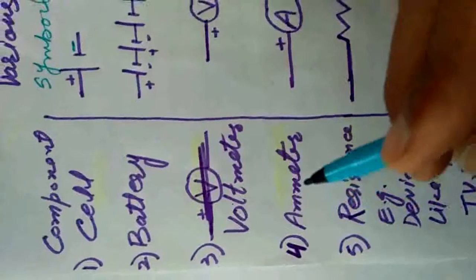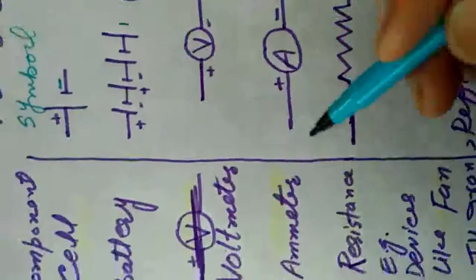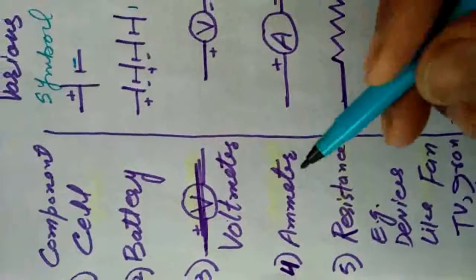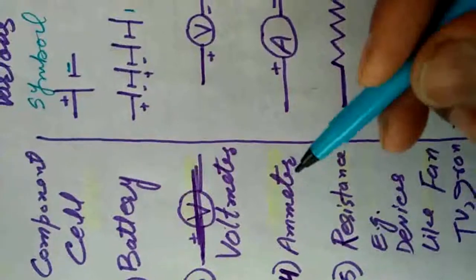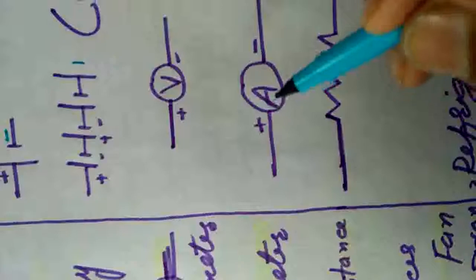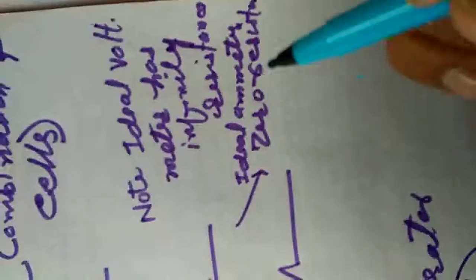The fourth component is the ammeter (referred to as 'emitter' here). It is a device used to measure current. The ammeter is represented by this symbol. An ideal ammeter has zero resistance.